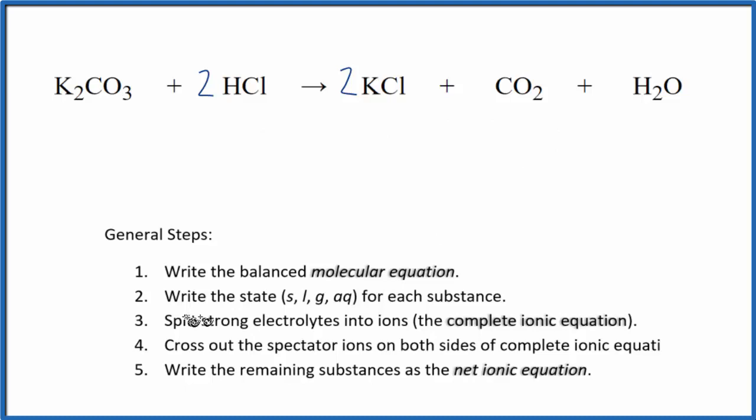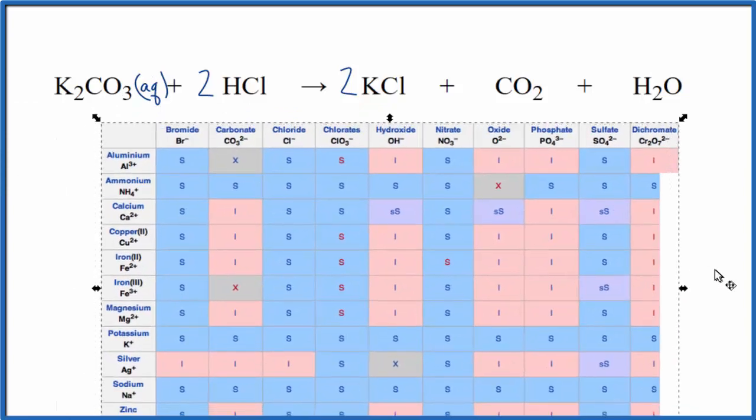Then we need to write the state for each substance. This K2CO3, that's potassium carbonate. It should be aqueous, but we could take a look at a solubility table just to make sure. We got potassium right here and then the carbonate.